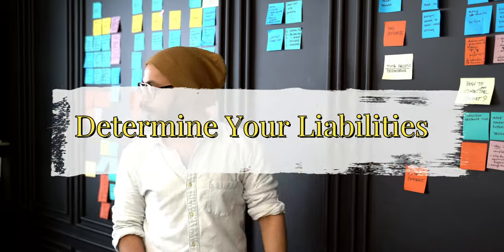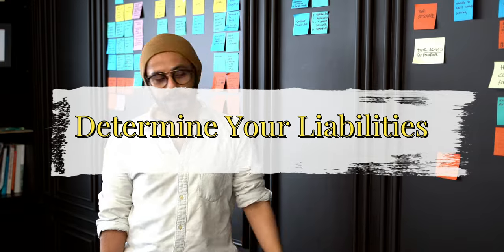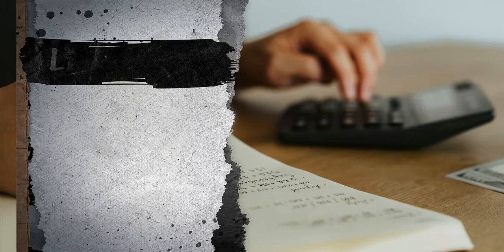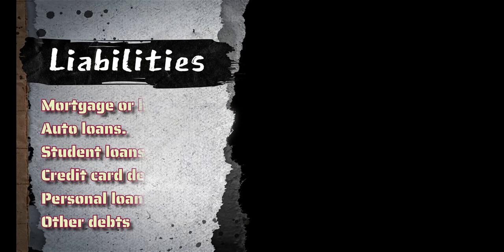Determine your liabilities. List all your liabilities, which are your debts or financial obligations. This includes mortgage or home loan, auto loans, student loans, credit card debt, personal loans, and any other debts or money you owe.